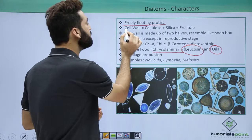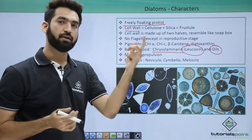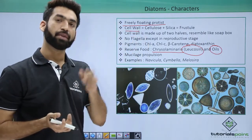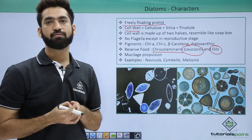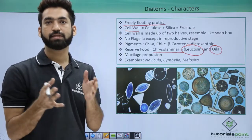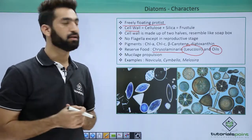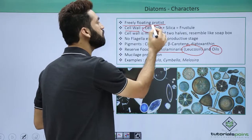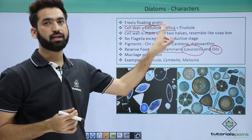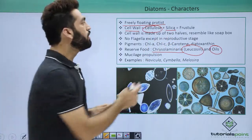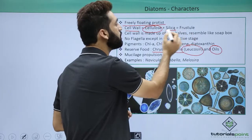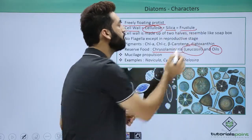Diatoms also have a cell wall. Dinoflagellates were also having a cell wall — the cell wall of dinoflagellates was made up of cellulose and pectin. Here, apart from cellulose, diatoms have silica. It is very important that they have silica in their cell wall, and both of these together are called the frustule.